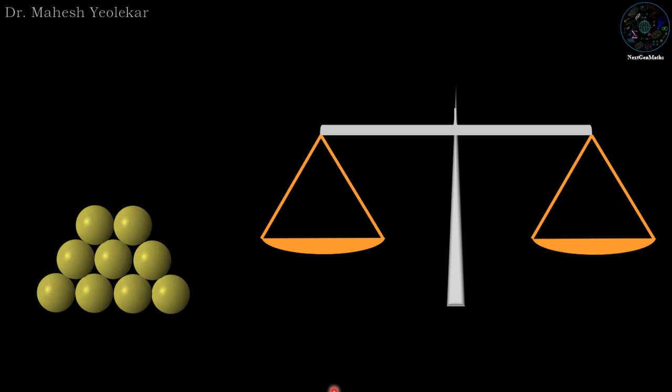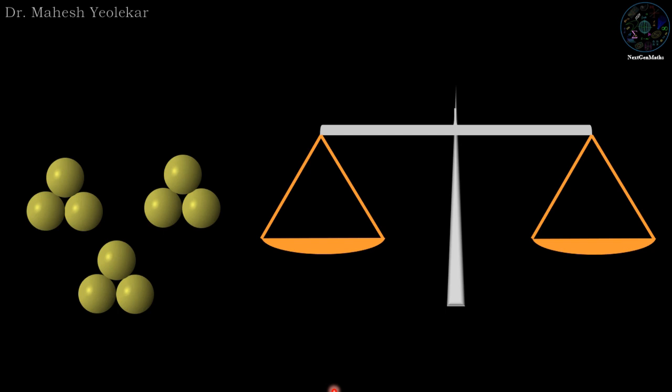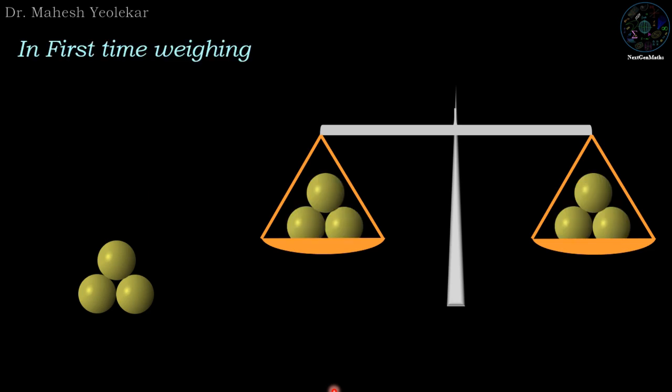First we divide nine balls into three groups of three balls. In the first trial we put two groups of three balls on the two pans of the balance.